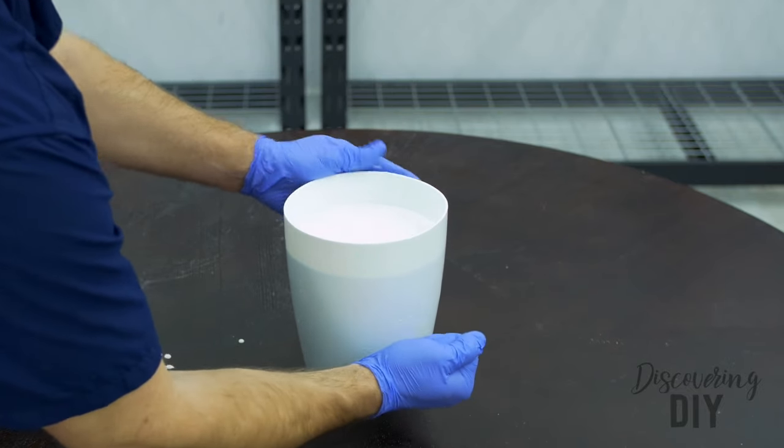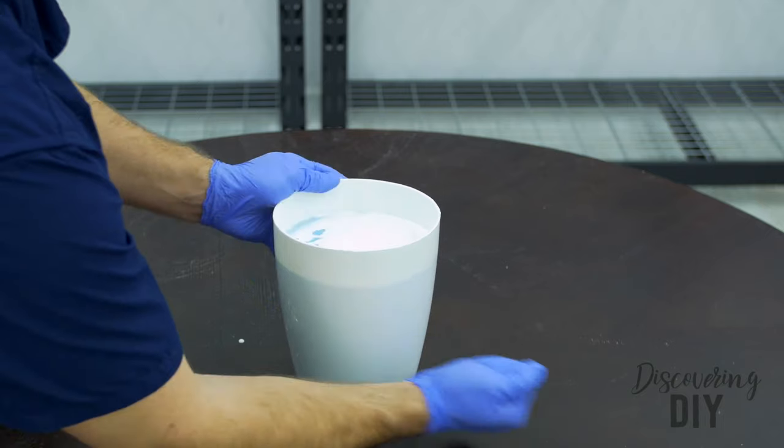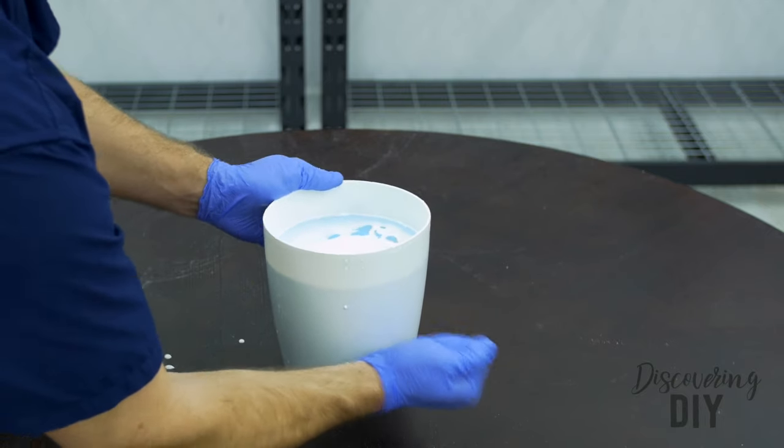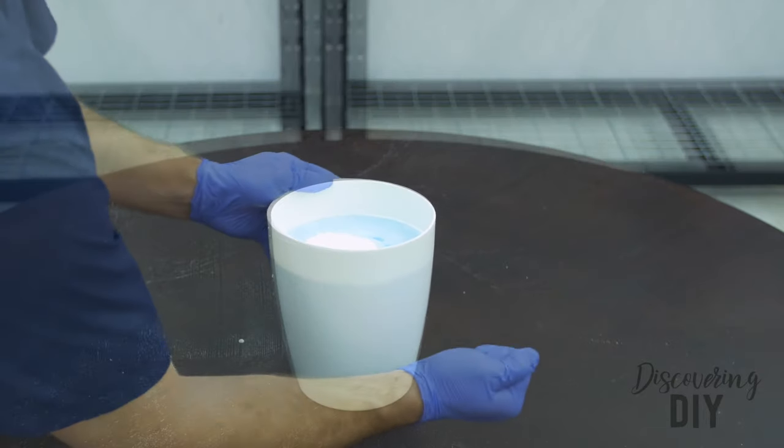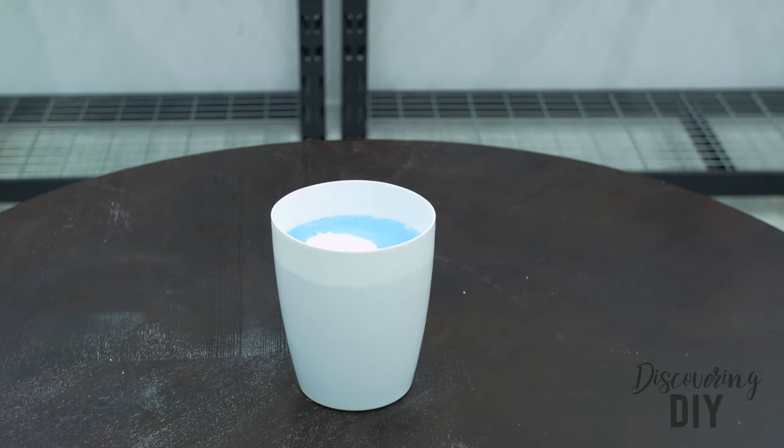Finally, tap each side of the bucket several times to release any extra bubbles. Congratulations, you have completed the casting of your mold. Next, place the bucket in an area where it will not be disturbed.